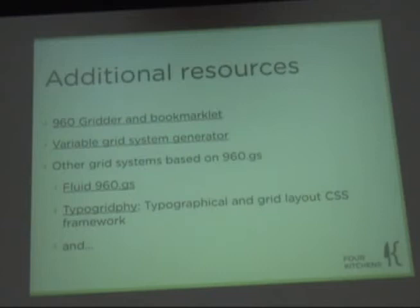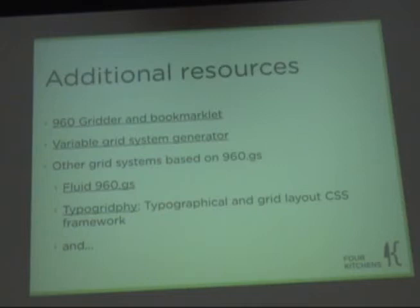Additional resources: there's a 960 gridder bookmarklet. If you go to 960.gs, they're pretty prominent links. If the 12 and 16 column don't do it for you, or you want 1080 wide instead of 960, you can configure that visually, type in different numbers, and it will generate a CSS file for you to download. One thing you'll have to do is find and replace on the underscores.